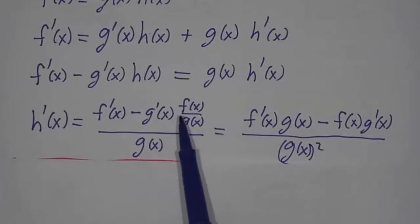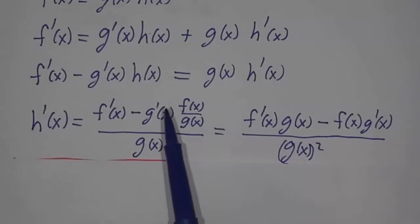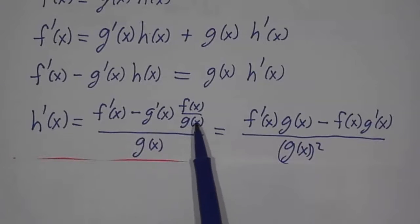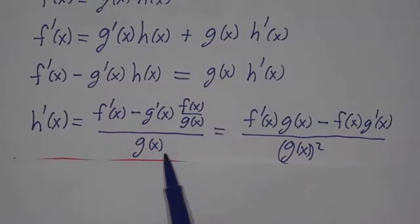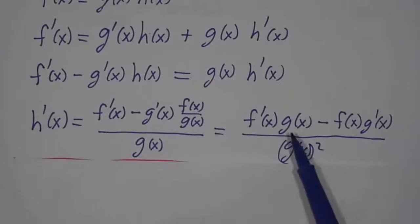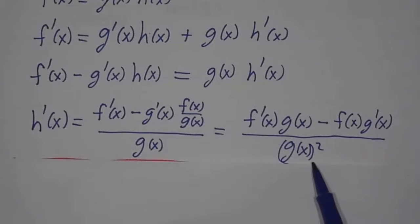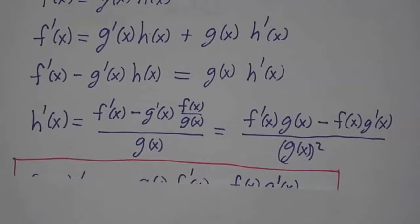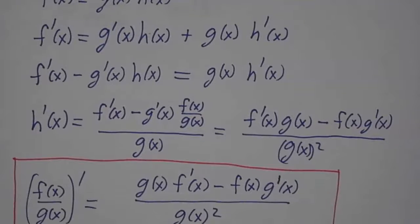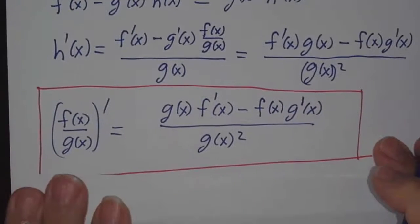And of course h is f over g, and so there we have it. Except this is a little bit ugly, because it's got this f over g in the numerator and a g downstairs. So let's multiply the top and the bottom by g, and then we get f prime times g, minus f times g prime, divided by g squared. So that is our quotient rule.